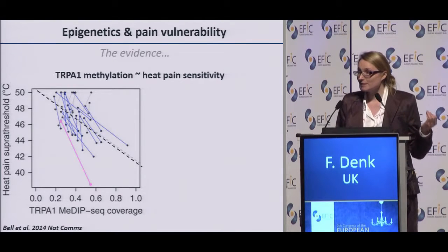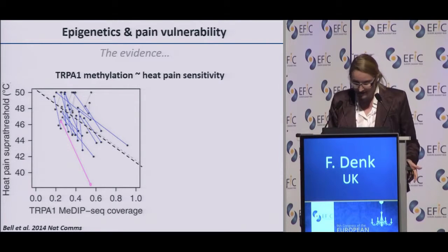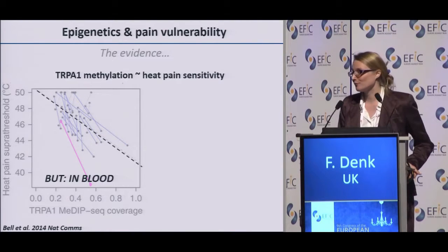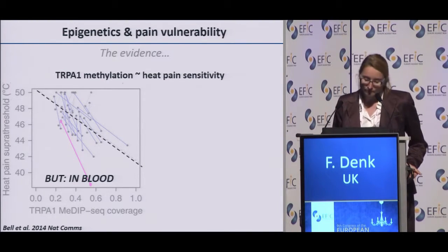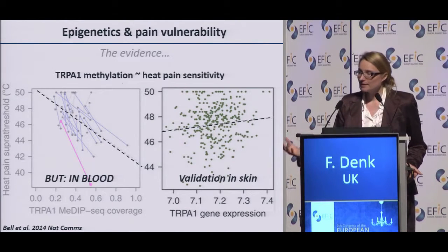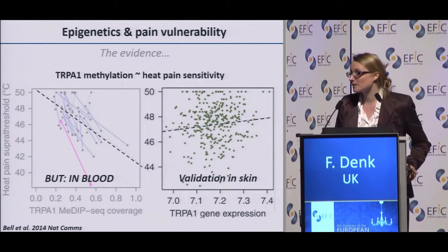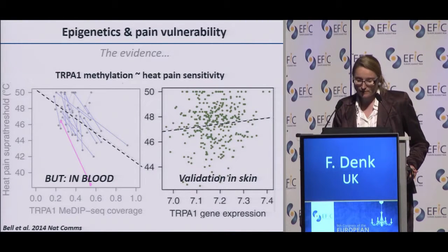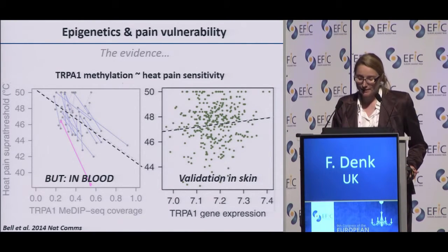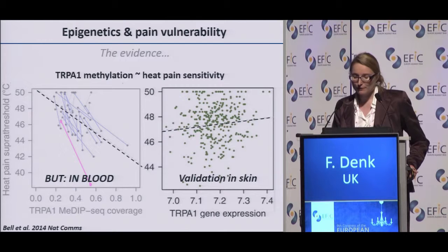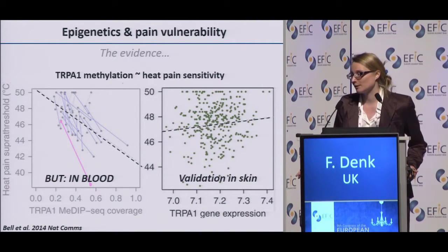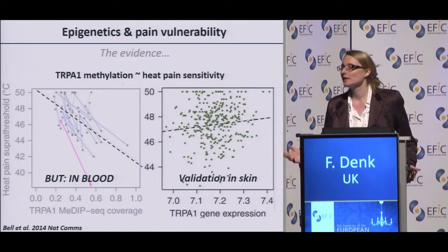As with all epigenome-wide methylation studies in neuroscience at the moment, the study was conducted in blood. Cell-type specificity is really important, and we don't know what this means for the epigenome in neurons. To offset that, Jordana validated some findings in skin tissue, which is more relevant. She looked at TRPM1 gene expression, and the results were in line with what you would expect: someone with a low heat pain threshold had low TRPM1 expression, consistent with high methylation, and vice versa. A very nice example of what you can do in humans.